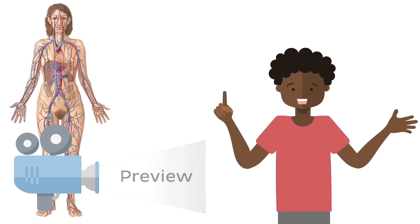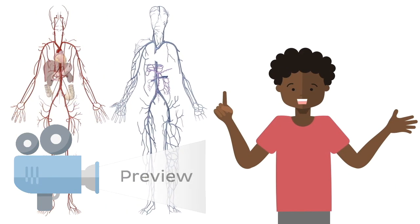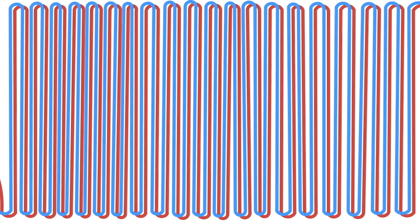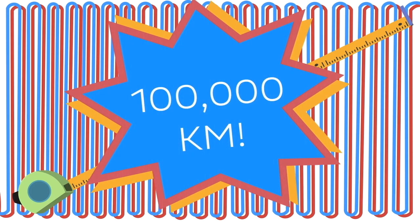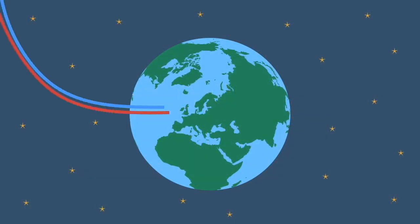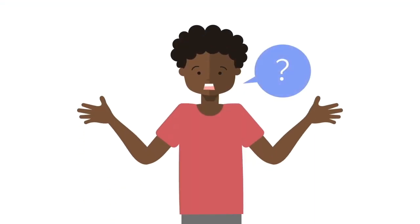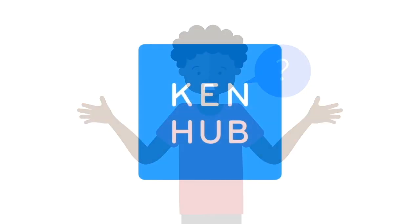Did you know that if you took all the blood vessels in our body and laid them out end to end, they would measure about 100,000 kilometres? That's enough to wrap around the earth two and a half times. But what exactly does it take to make a blood vessel? Let's find out now as we explore the microanatomy of blood vessels.